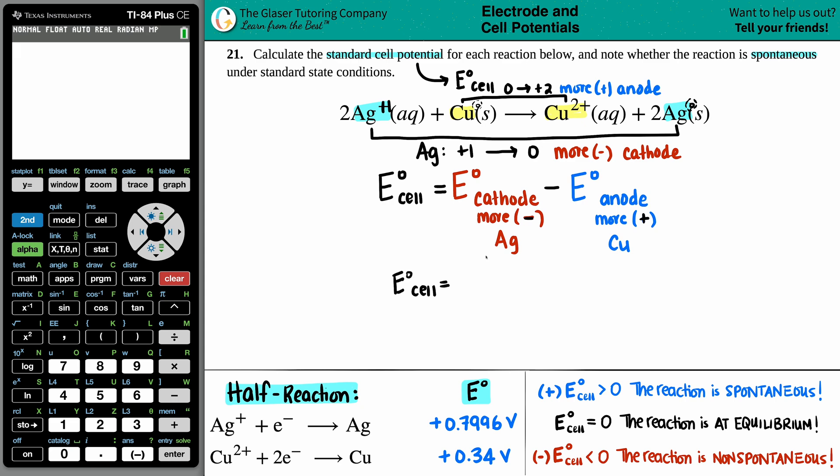So E cell would be the Ag half reaction voltage. So that's 0.7996. And then I'm going to subtract that from the other one, the anode, 0.34. Let's plug it into calci, see what we get. E cell would equal 0.7996 minus 0.34.